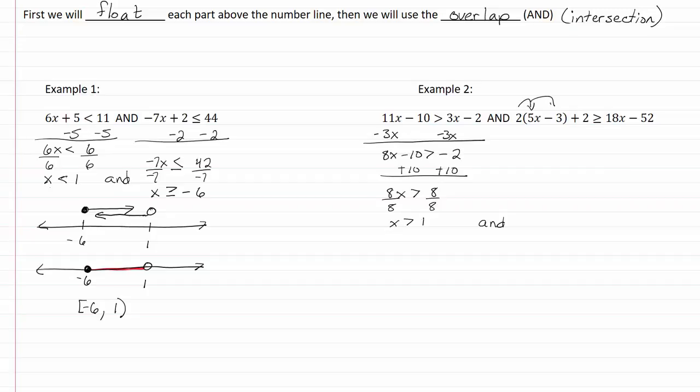This one we need to distribute here, so we're going to get 10x - 6 + 2 greater than or equal to 18x - 52. So we have 10x - 4 greater than or equal to 18x - 52.